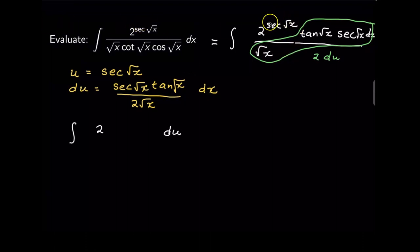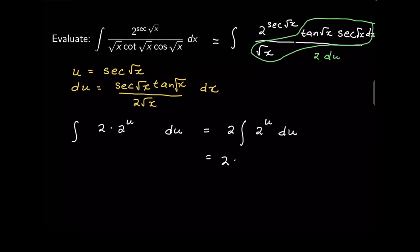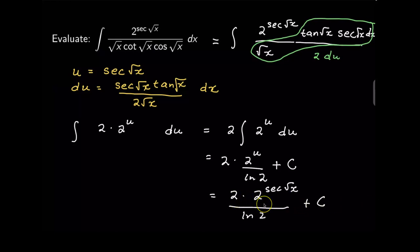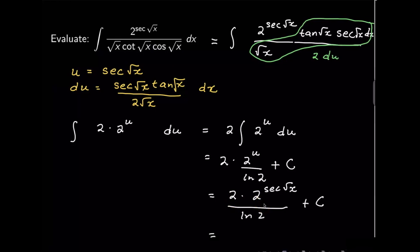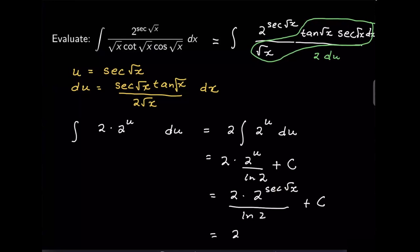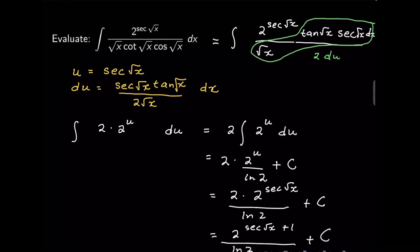My original 2 times square root of x becomes 2 to the u. Bringing the 2 outside, we have 2 times the integral of 2 to the u. The integral of 2 to the u is 2 to the u over ln 2, plus c. Substituting back: 2 times 2 to the secant of square root of x, over ln 2, plus c. Since we have the same base, we can add exponents, giving 2 to the (secant of square root of x plus 1), over ln 2, plus c.